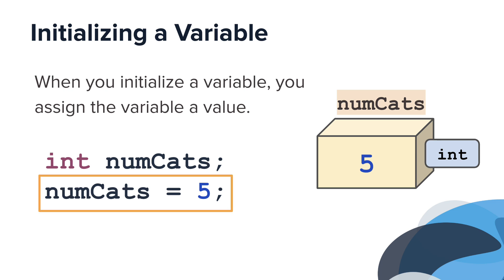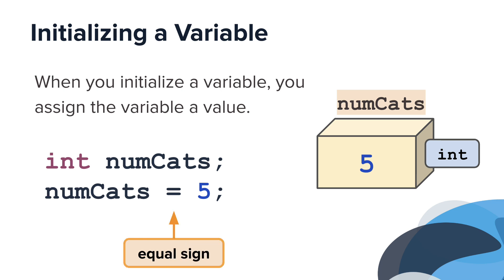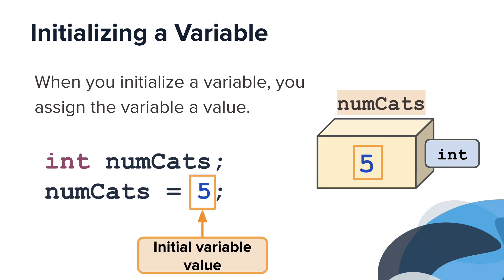This is what it looks like to assign a variable a value. You first write the variable name, followed by the equal sign, followed by the initial variable value. With this line of code, the empty box now stores the value of five.